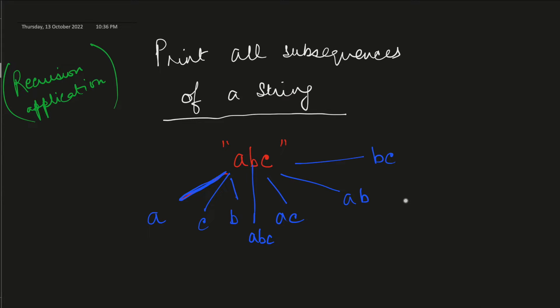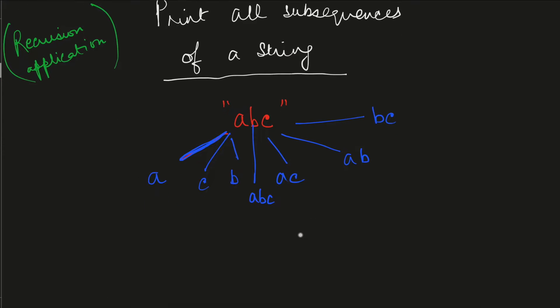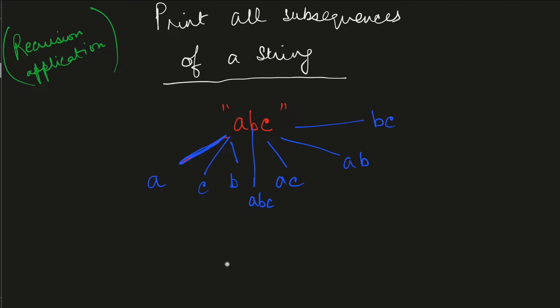This question could be a good starting point for those who have already completed the basic recursion questions and want to understand intermediate recursion problems. Now let's understand the approach. There are many different ways of solving this with recursion, and the approach we are going to talk about today is called the pick and don't pick concept.